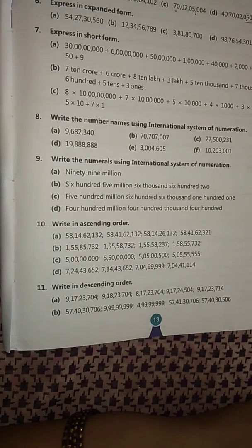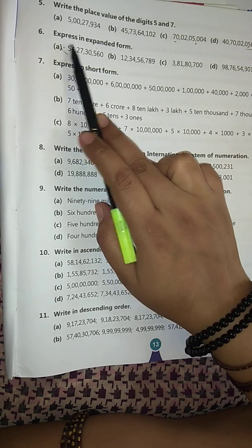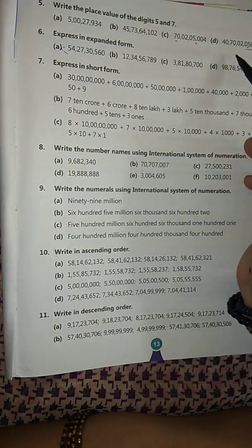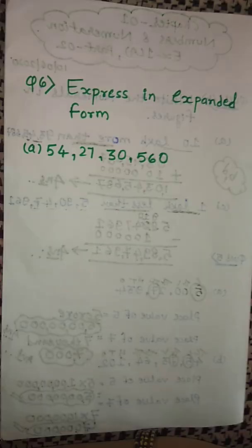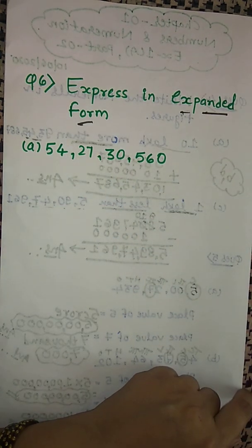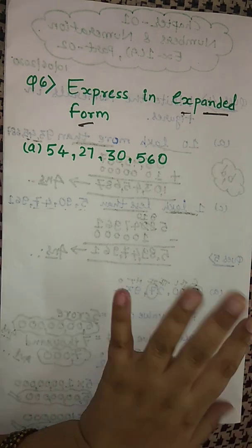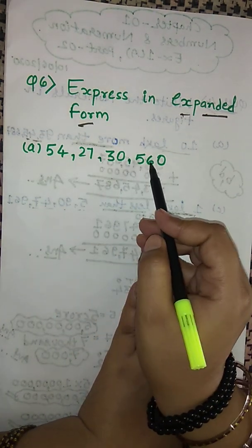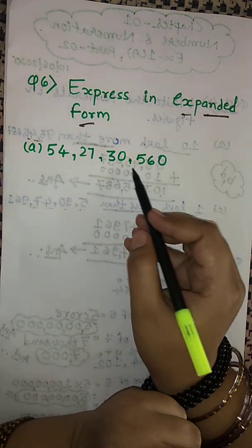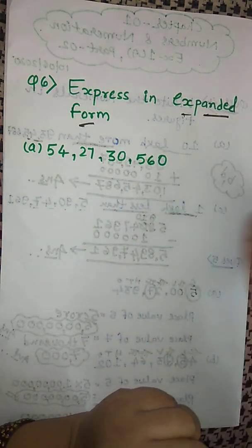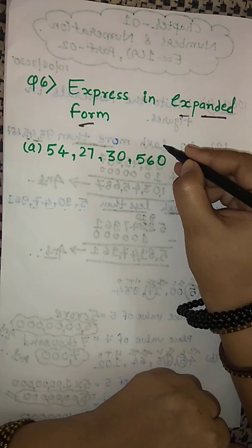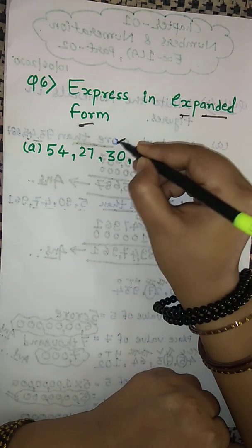Now question number 6: express in expanded form. There are four questions — (a), (b), (c), (d). We have to write the given numbers in expanded form. Expanded form means each digit of a number is written with its place value. If you write each digit along with its place value, that form is known as expanded form.